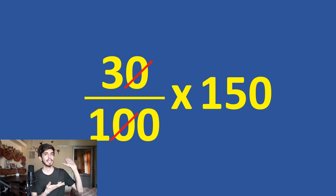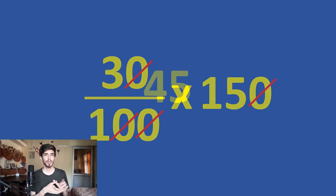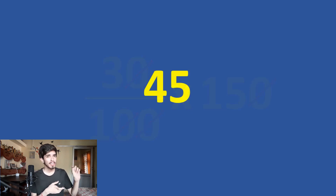The zeros cancel and 15 threes are 45. So 45 is basically 30% of 150 — as simple as that. What I am going to teach you in this video is a simple trick which will make questions that are a little difficult to calculate using the previous mental math trick even easier, and that trick is really basic and simple too.